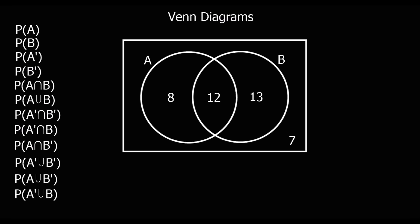Let's imagine A is people who like apples and B is people who like bananas. This circle is everyone who likes apples, and this circle is everyone who likes bananas. In the middle, they're the people who like both apples and bananas. We've got 8 people who like just apples, 12 like apples and bananas, 13 like just bananas, and 7 people out here who don't like either apples or bananas.